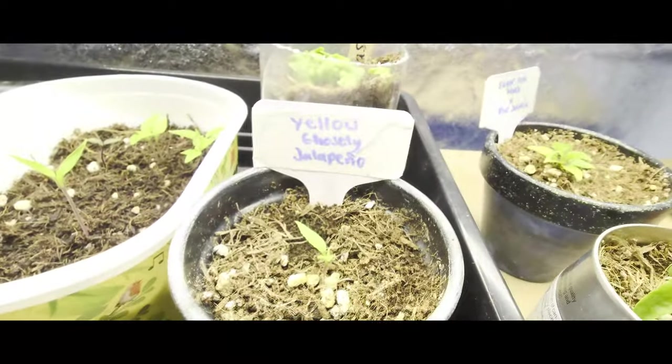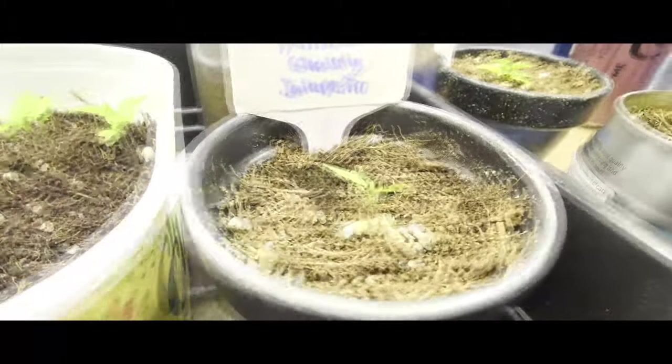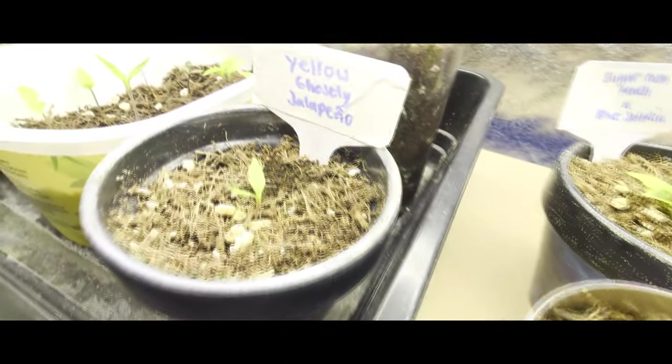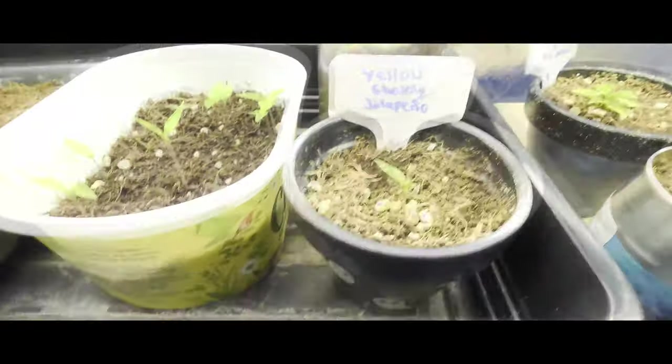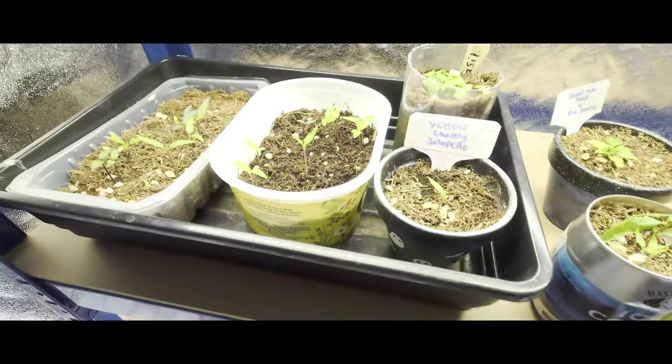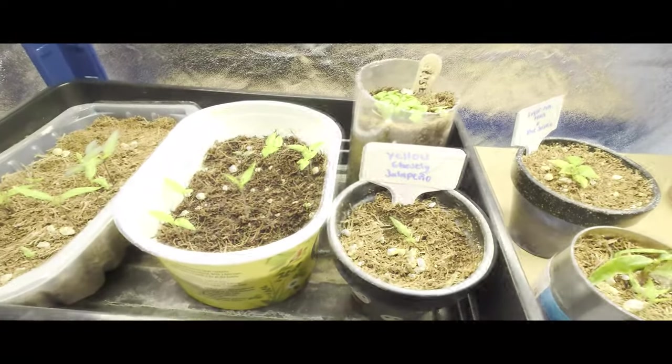Here, one of three Yellow Goasty Jalapenos. As you can see, it's got nice true leaves coming through, looking quite healthy. I've started bottom watering using this big tray thing. I think I'm going to order a couple more of these because they're really quite useful for watering.